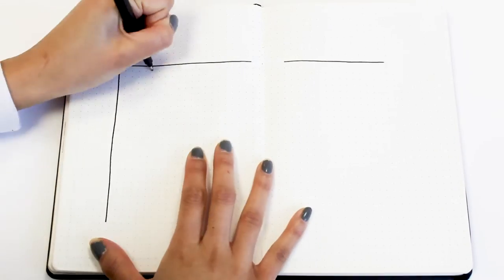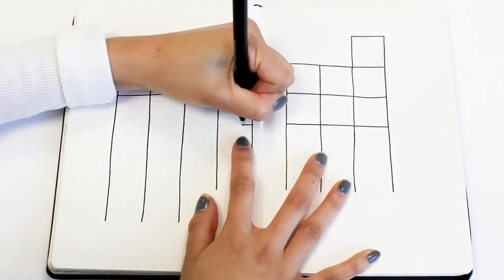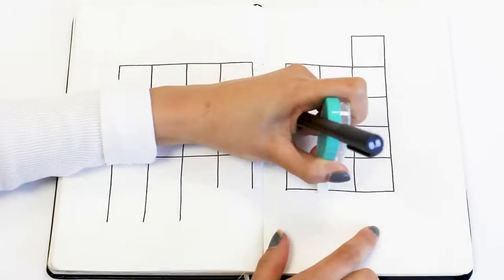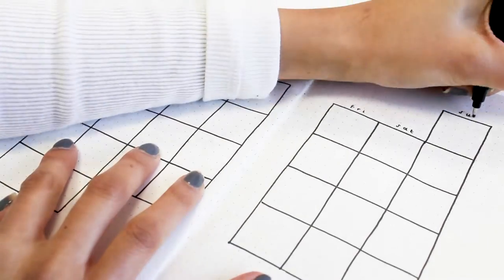Next is the monthly log. March is a tricky month because it starts on a Sunday and ends on a Wednesday, so technically that's six different weeks. For this I just decided to go smaller with the boxes and I think this turned out to be really cute.